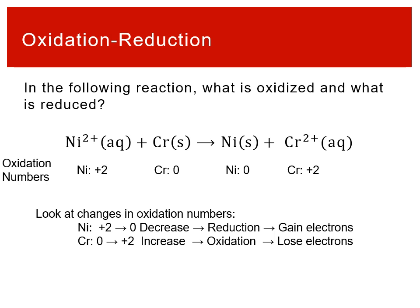Just as we assign oxidation numbers to each atom type, individual atom types are always associated with reduction or oxidation. Whenever we need to figure out what's oxidized and what's reduced, we compute oxidation numbers and look at how they change across the reaction — comparing reactants to products.